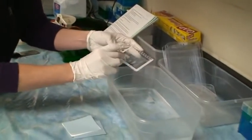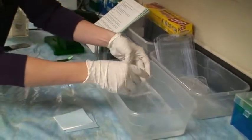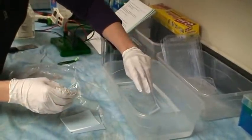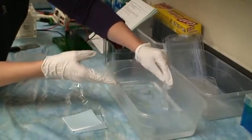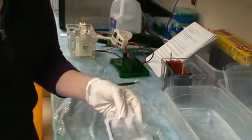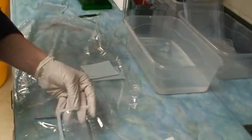You've got this dish of transfer buffer, and you can try to peel your gel off. It's probably easier to just lay your gel and the plate into the dish. Before you do that, you're going to want to make sure that you mark the orientation of your gel.